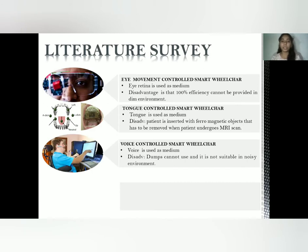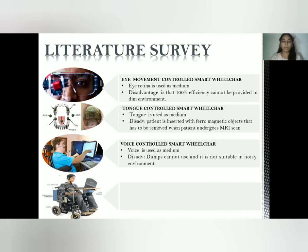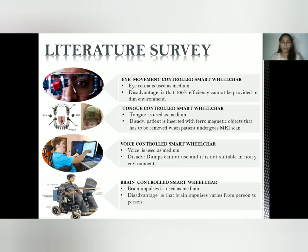Next is the voice control smart wheelchair, where voice is used as the medium. The disadvantage is that it doesn't give good efficiency in a noisy environment. The last is the brain control smart wheelchair, which is very complex to design as brain impulses vary from person to person. Our proposed project, the head motion controlled smart wheelchair, overcomes all these disadvantages.